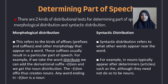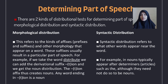Second is syntactic distribution. Syntactic distribution refers to what other words appear near the word. For example, nouns typically appear after determiners or articles such as 'the,' although they need not do so to be nouns.